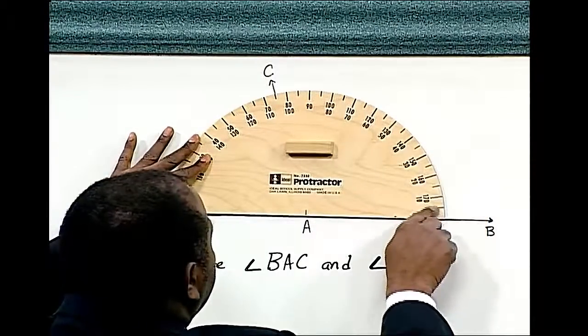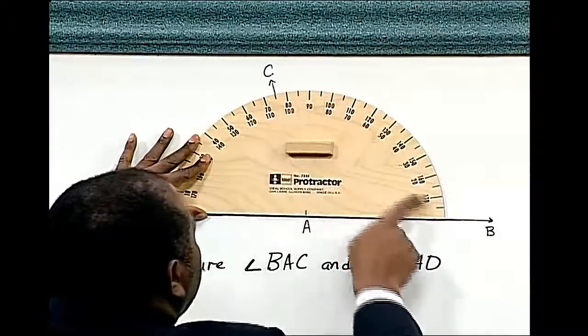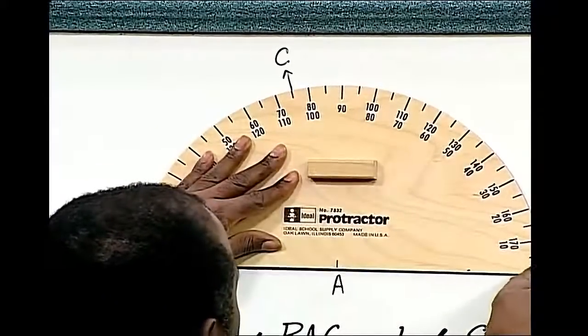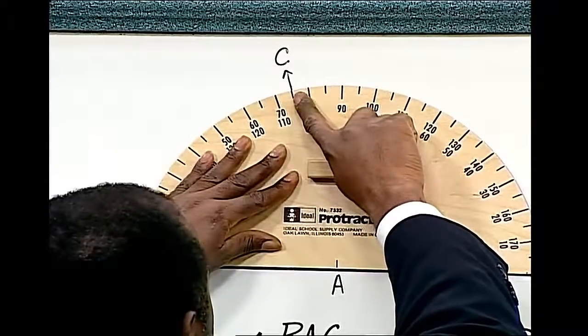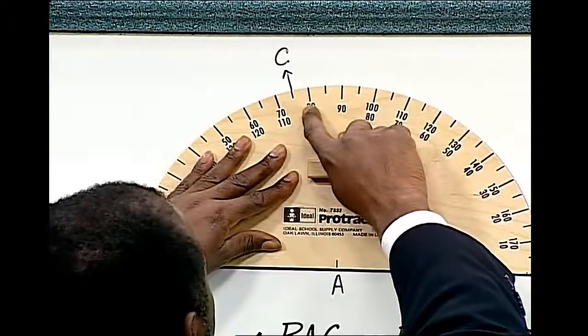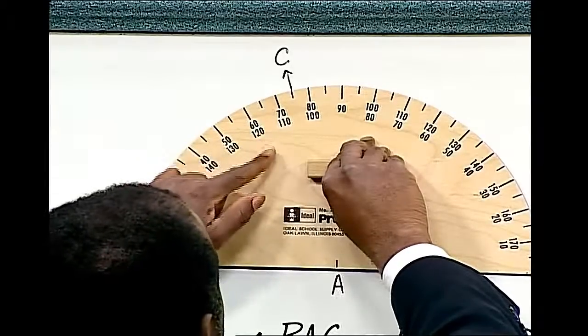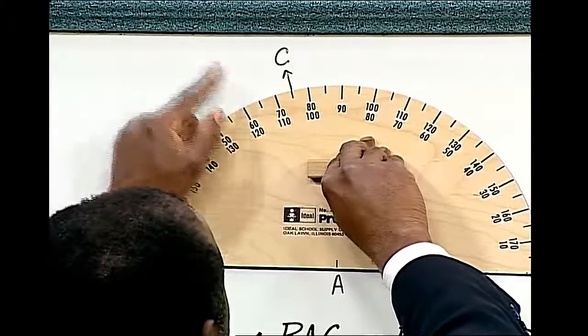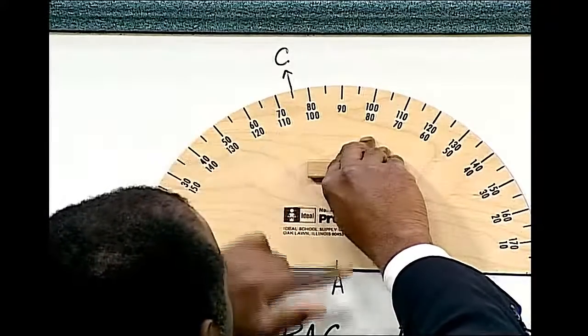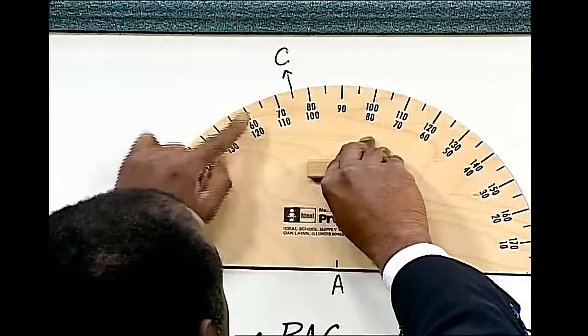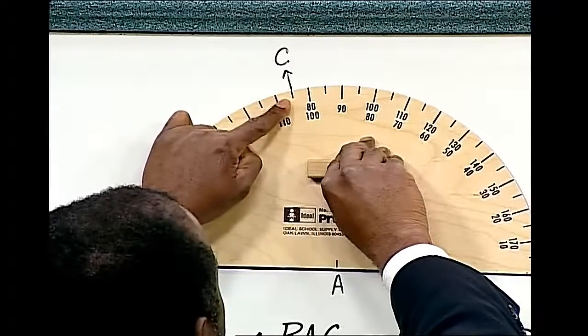Now as we read up the protractor, we will see that angle CAB is equal to 105 degrees. We can find angle CAD by subtracting 105 degrees. 180 degrees minus 105 degrees is equal to 75 degrees.